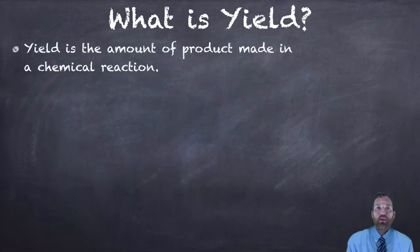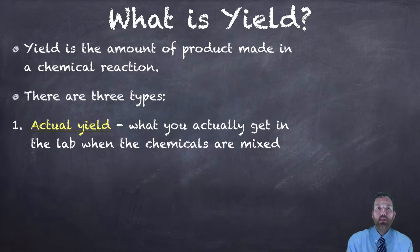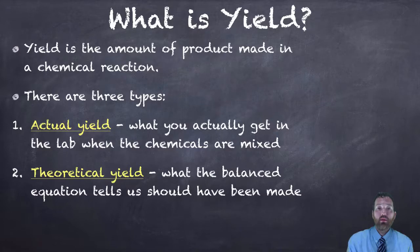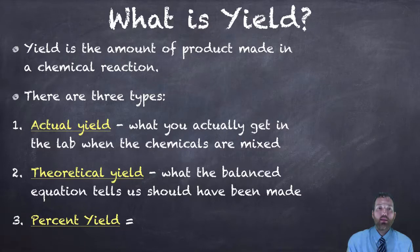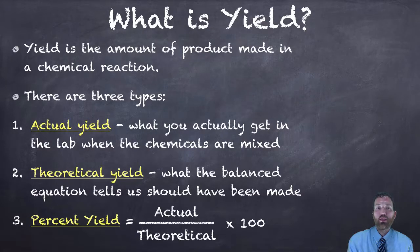Yield is the amount of product made in a chemical reaction — it's how much you made, how much you yielded. There are three types of yield. There's the actual yield, which is what you actually get in the lab when the chemicals are mixed and you weigh it on a scale. There's the theoretical yield, which is what the balanced equation tells you should have been made according to the math. And then there's the percent yield, which is the actual yield divided by the theoretical yield times 100. That basically tells you how good you were — how close did you get to what you were supposed to get according to the math.